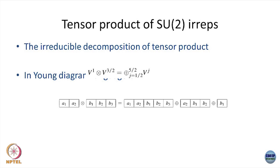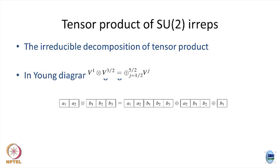I am putting it in this notation so that you can map it to the tensor product. The right-hand side is an irrep; the left-hand side is a reducible representation. What are the dimensions? Spin 1 has dimension 3, spin 3/2 has dimension 4. 3 times 4 is 12, and it has to split into irreps so that the dimensions add up to 12.